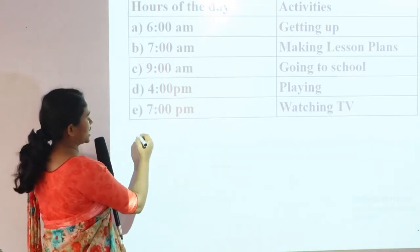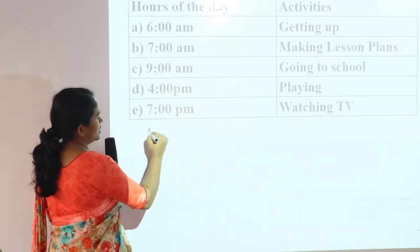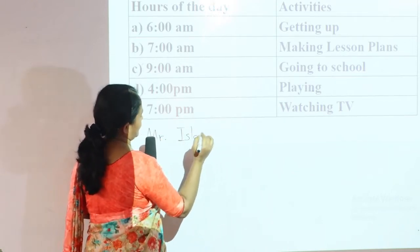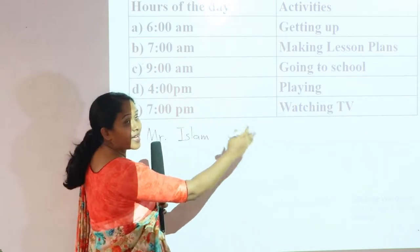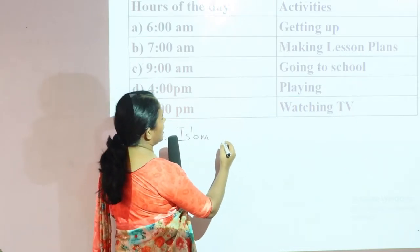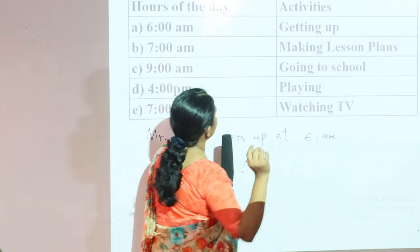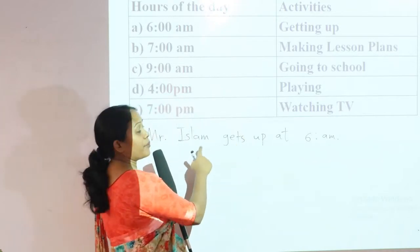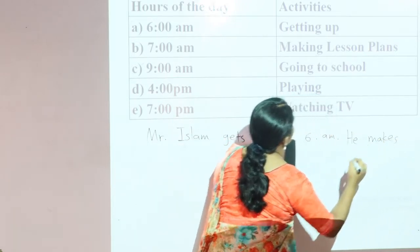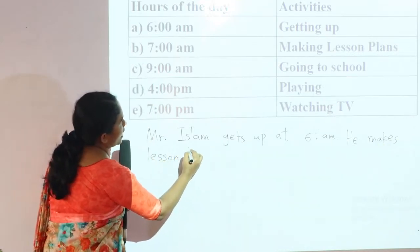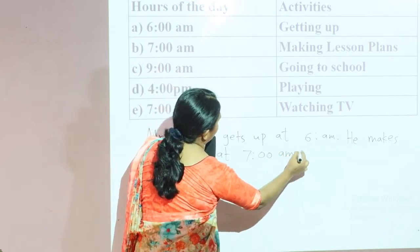Suppose your teacher is Mr. Islam. The first column is about the hours of the day and the second column is about the activities. You can start with the activity and mention the time at the end. Mr. Islam gets up at 6 a.m. He makes a lesson plan at 7 a.m.